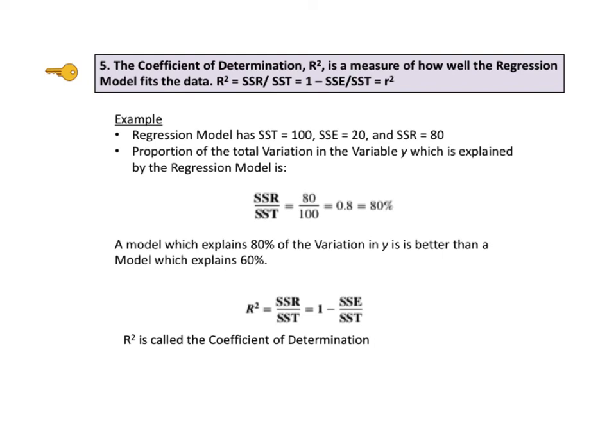The proportion of the total variation in the variable y, which is not explained by the regression model, is what's left. SSE divided by SST equals 1 minus SSR divided by SST, which equals 20 percent.